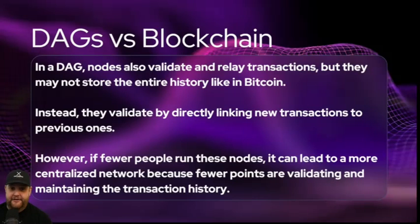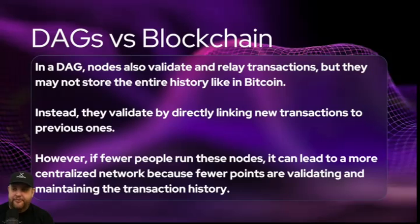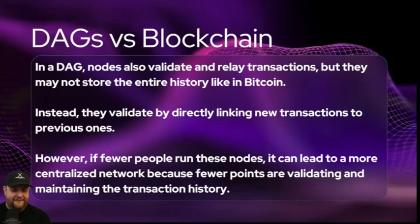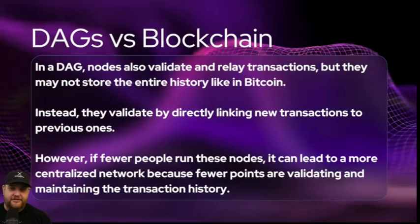DAGs also have nodes. Nodes validate and relay transactions, but they may not store the entire history like Bitcoin. DAGs validate by directly linking new transactions to previous ones. However, fewer people running nodes can lead to a more centralized network because fewer points are validating and maintaining transaction history. If the network becomes unpopular and the amount of nodes and transactions drops off, it becomes easier to manipulate transactions when confirmations are fewer.